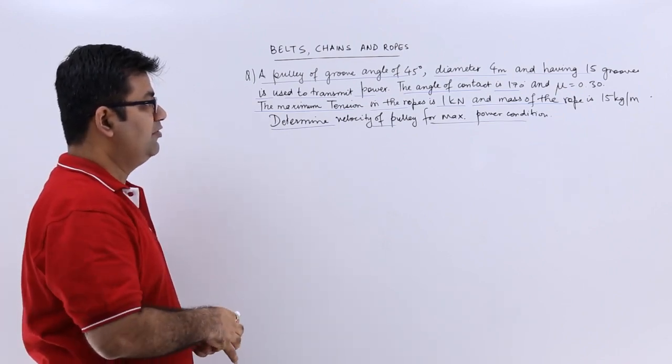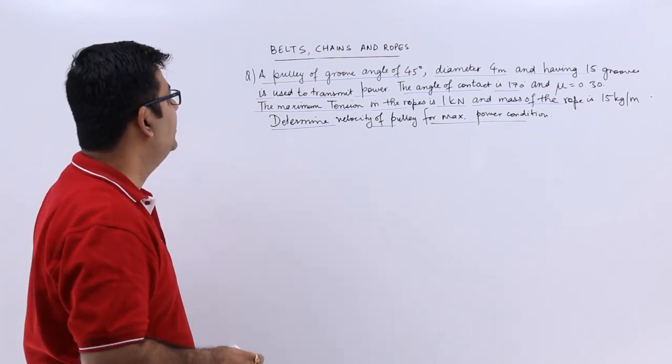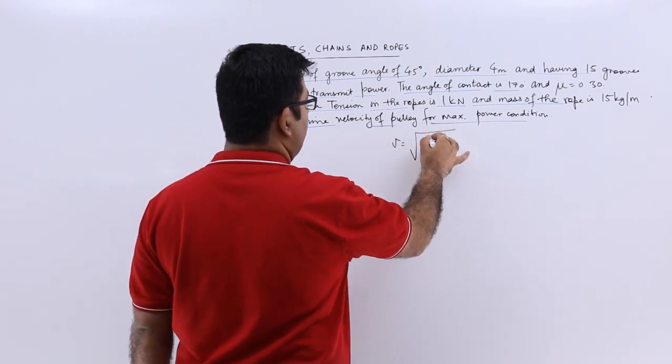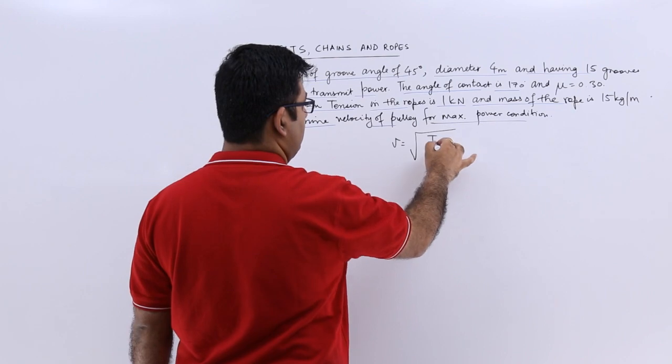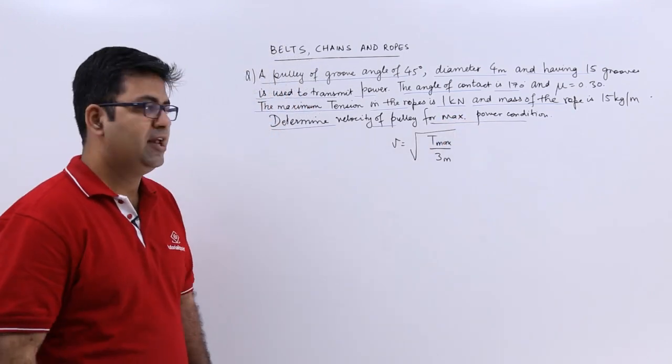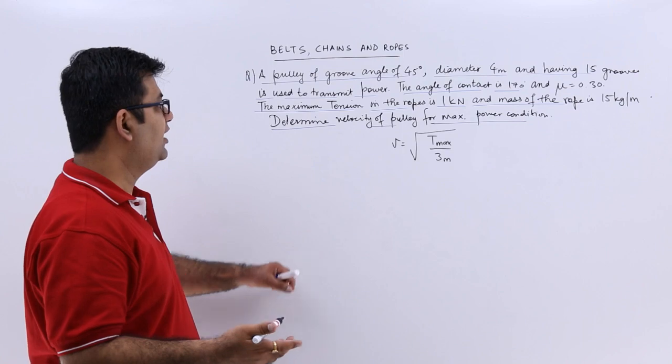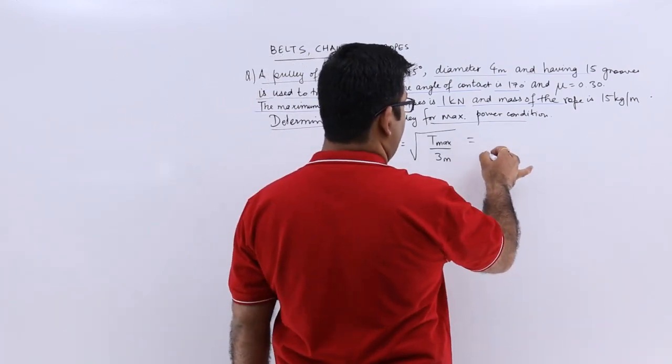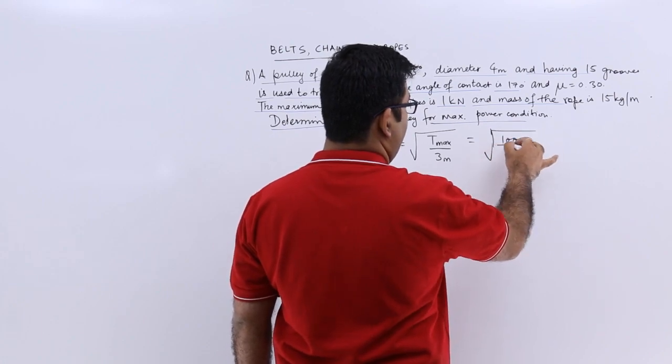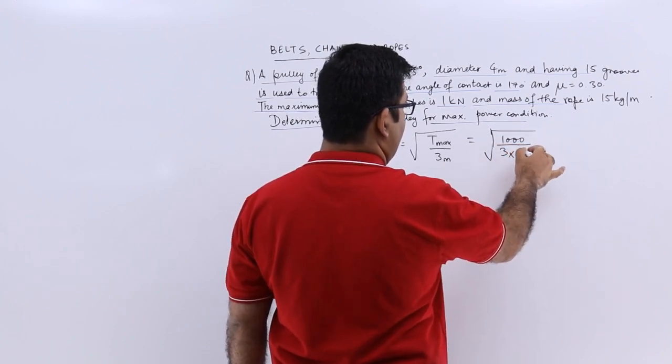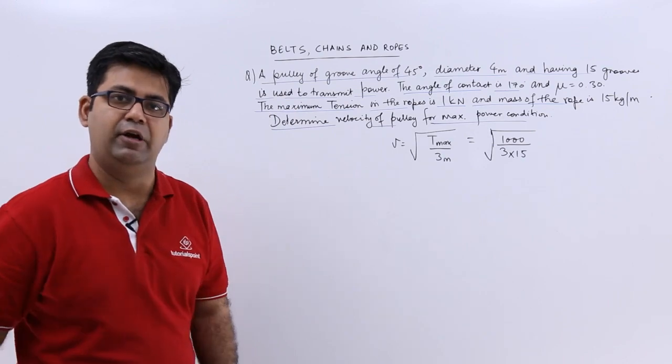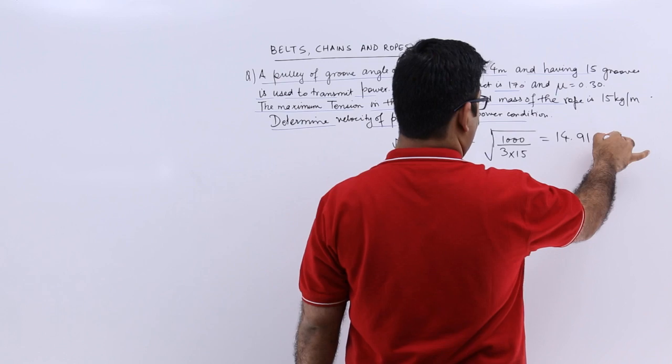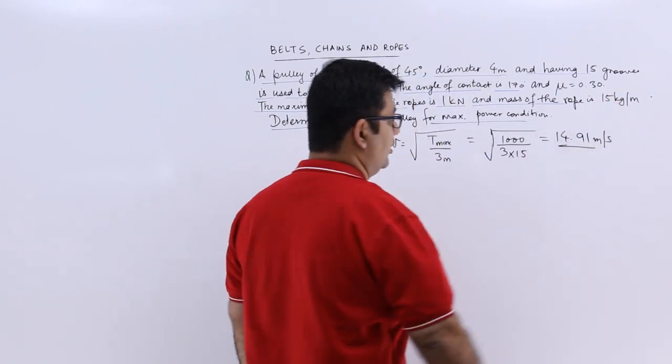So for the maximum power condition, the velocity would be given as square root of T max upon 3 into mass. Now the maximum tension that it can have is 1 kilonewton, that's 1000 newtons upon 3 into 15, that's the mass per unit length, and that would give you a value of 14.91 meters per second.